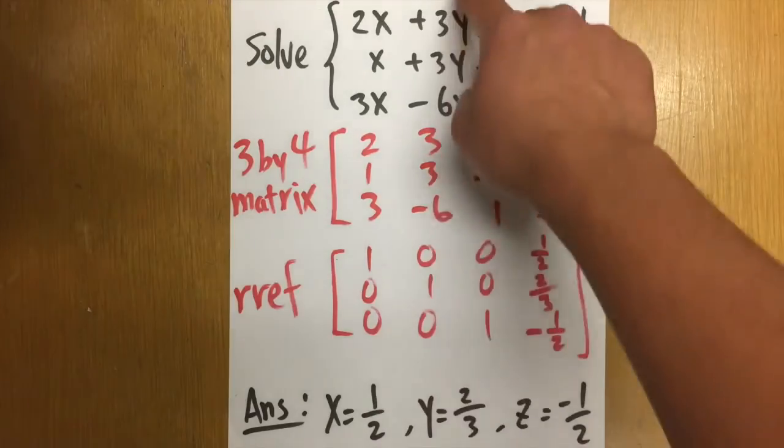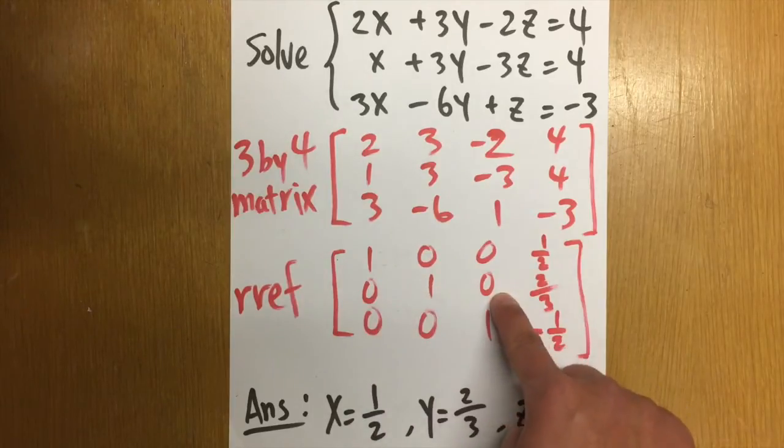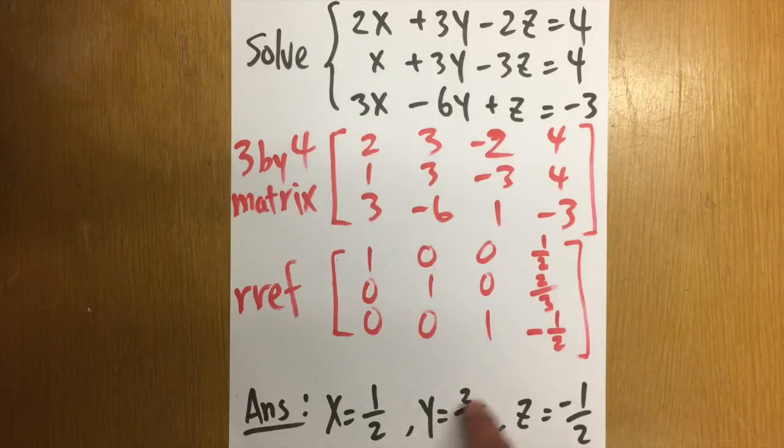Likewise, this right here is the Y column, so that means we have 0 X, 1 Y, 0 Z, and this is equal to 2 thirds. So, Y is equal to 2 thirds.